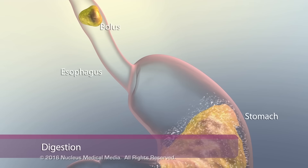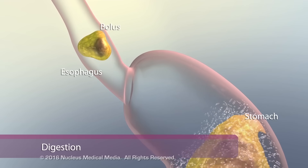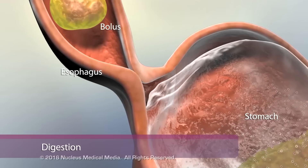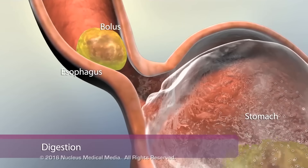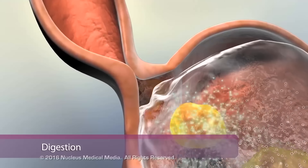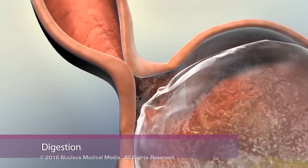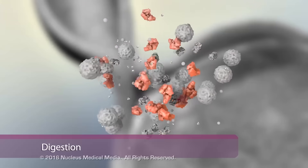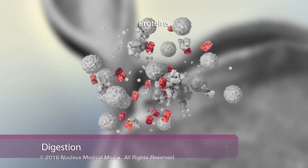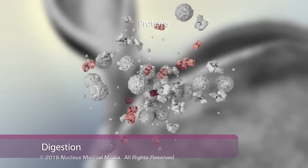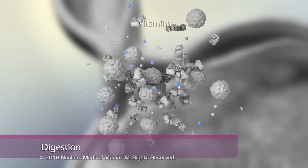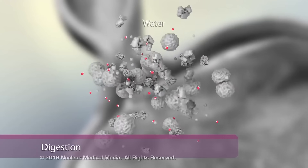Food moves through the esophagus and enters the stomach, where digestive enzymes and stomach acid continue breaking it down. The resultant breakdown product, called chyme, contains carbohydrates, small proteins, minerals, fats, vitamins, and water.